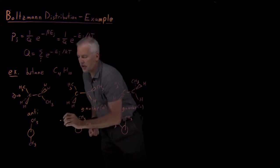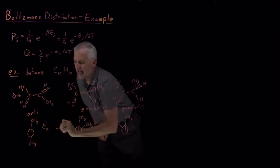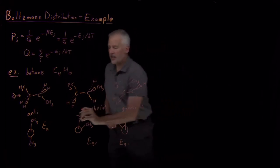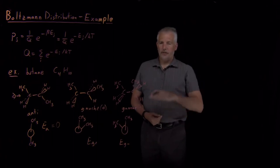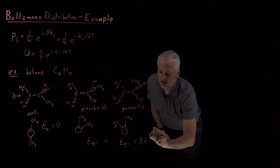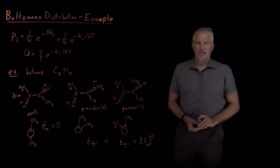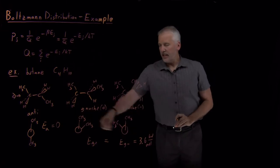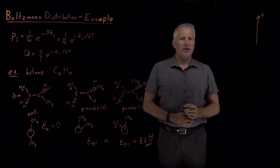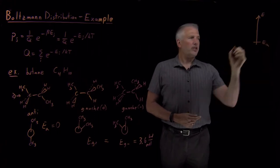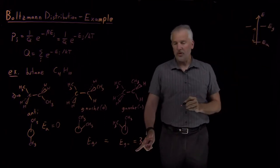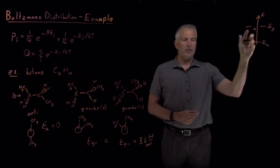I can tell you the relative energies of those molecules. We'll label them E_a for anti, E_G+ for Gauche plus, and E_G- for Gauche minus. If the energy of the anti state is zero — that's our zero of energy — then the energies of the Gauche plus and Gauche minus states are both equal to each other at 3.6 kilojoules per mole higher than the anti state.